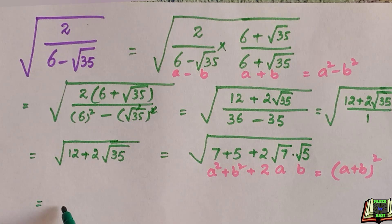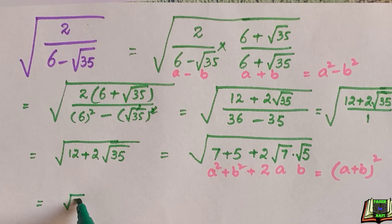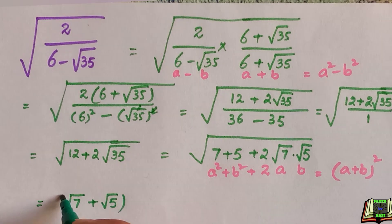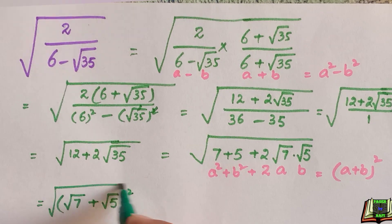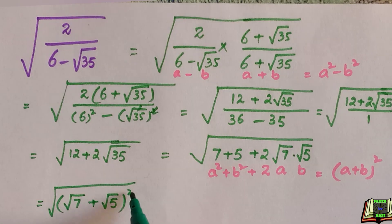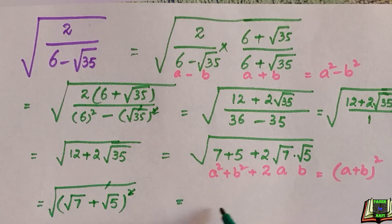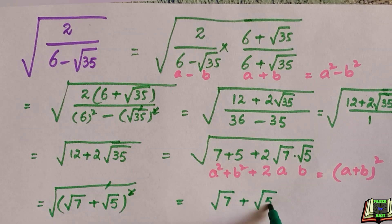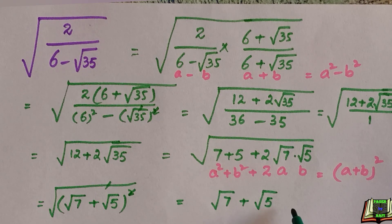So we can write this as square root of 7 plus square root of 5, whole square and whole root. In the next step this square and root cancel out. We have square root of 7 plus square root of 5, which is the final and required answer.